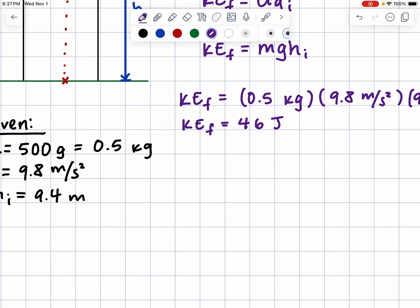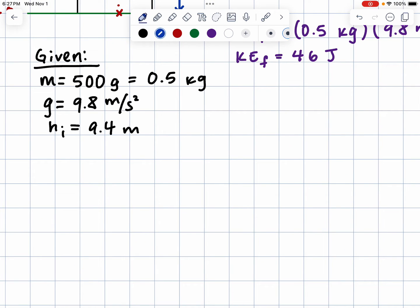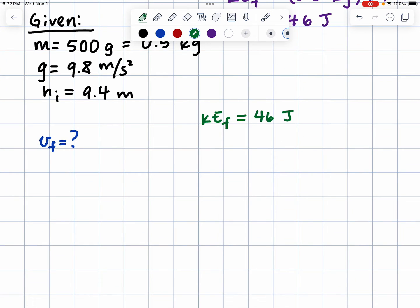What if we wanted to know the velocity right before it hits the ground? That would be the final velocity. We know what the kinetic energy is in terms of joules. Let me just do it analytically. I also know that the kinetic energy final is going to be one half times the mass of the ball times the velocity final squared.